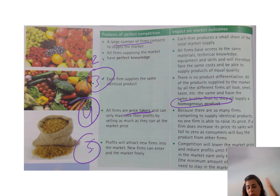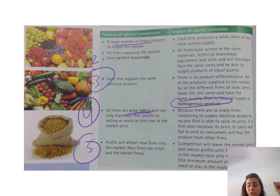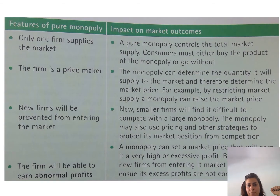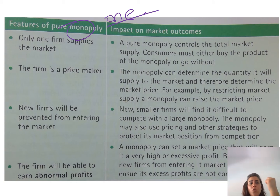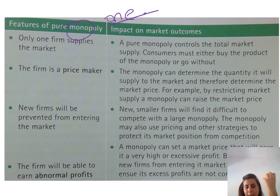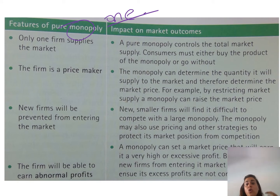Let's move on to page 249 and look at the green table on features of pure monopoly. Mono means one — so I have only one firm supplying the market with that particular product. This monopoly firm is controlling the market supply of the product and it is also controlling the price of the product.